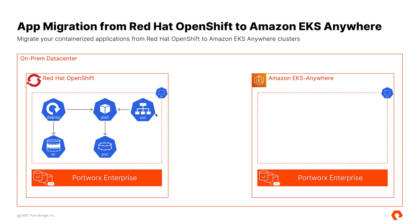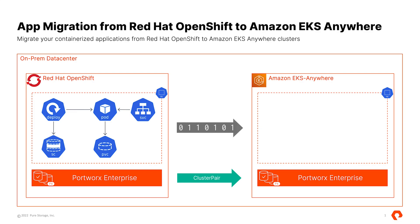Let's talk about the first scenario. We have two clusters running inside my own data center on VMware vSphere clusters — one is Red Hat OpenShift and the other one is Amazon EKS Anywhere. Both of these clusters have Portworx Enterprise deployed and configured on top of them, and we have a demo application installed for the migration demo. We'll start the migration process by first creating a cluster pair object between our source and destination clusters, which allows us to build a trust relationship and set up a migration job.